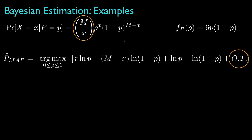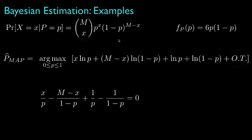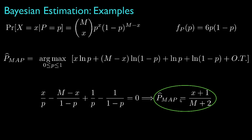There are also other terms that do not depend on the parameter and therefore don't matter for the optimization problem. These terms include the unconditional probability mass function for the observation, which is part of the expression for the posterior density. To solve this optimization problem, we differentiate the objective function with respect to the parameter and set the derivative equal to 0. The MAP estimator is then equal to the number of observed successes plus 1, divided by the number of trials plus 2. This value is always between 0 and 1, satisfying the parameter constraint.